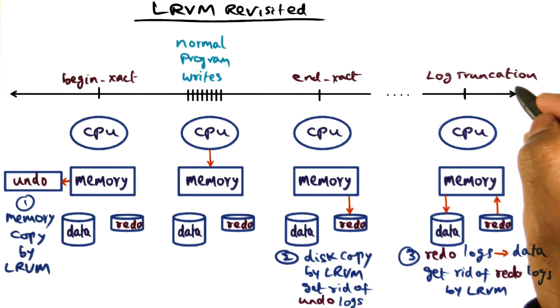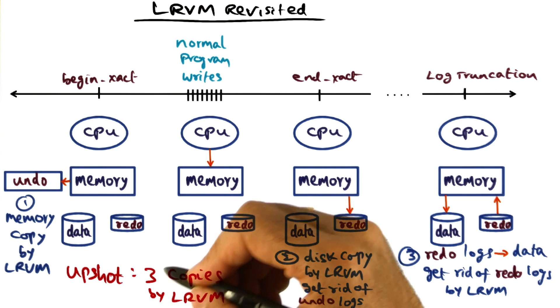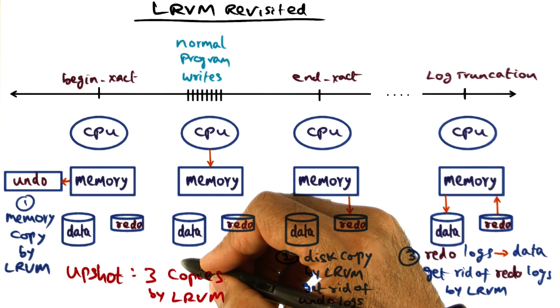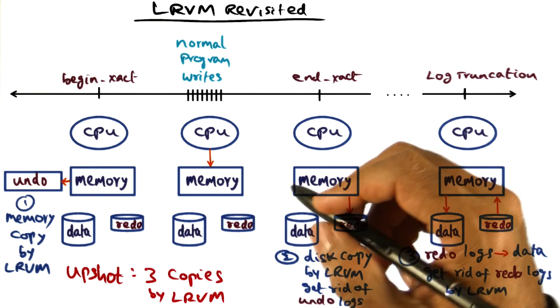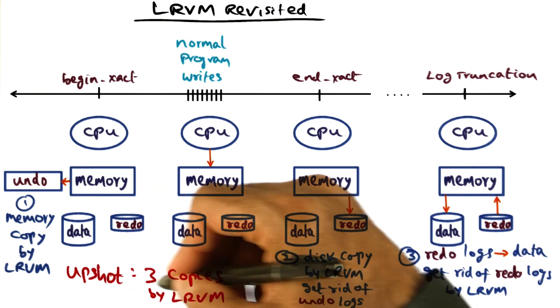So this is the log truncation or cleanup of the disk space that is done periodically by LRVM. Because in the absence of crashes, you have to make sure that you clean up the disk every once in a while. So the upshot of LRVM implementation is there are three copies of the VM space done by LRVM to manage persistence for recoverable objects.